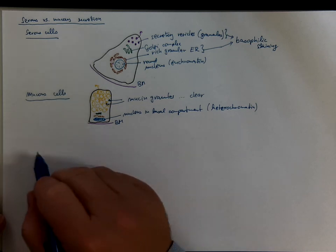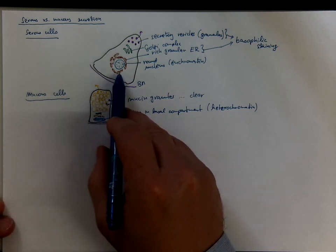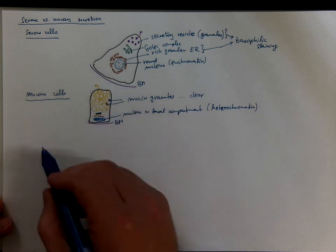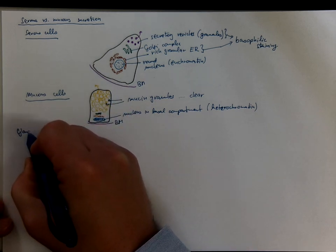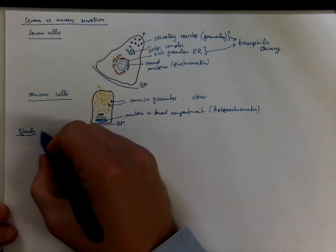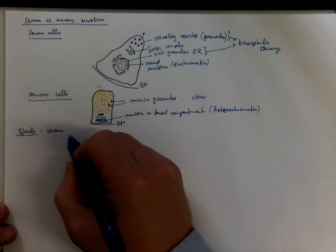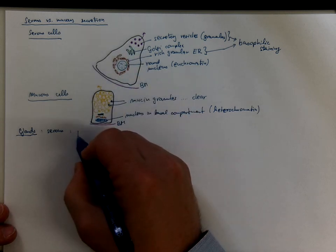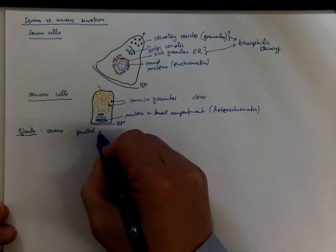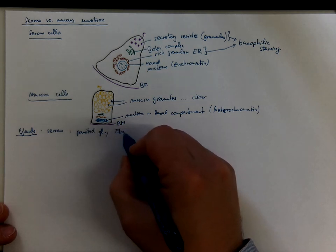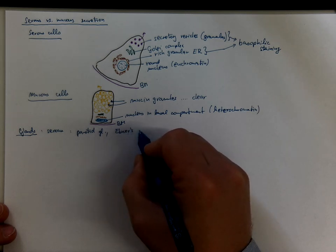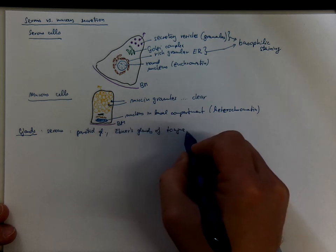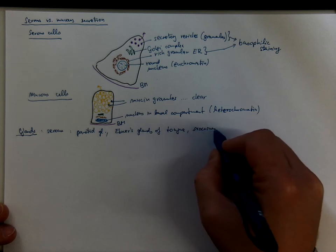Now, in the human body you have glands composed of solely serous cells, composed of exclusively mucous cells, or containing both types. And that's how you can classify serous glands comprising serous cells only. This is the example of parotid gland, the Ebner's glands of the tongue, or the exocrine portion of pancreas.